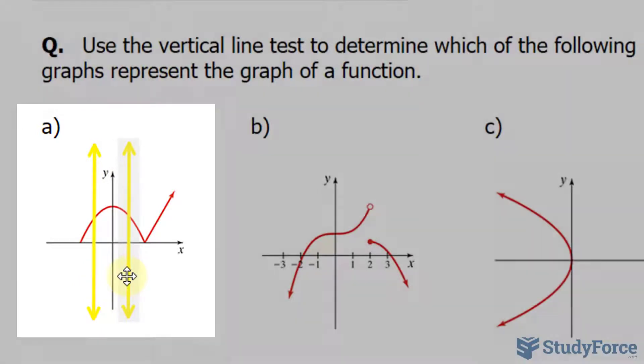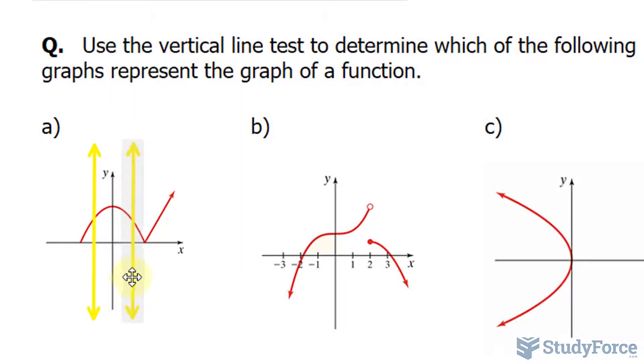As you can see, in this very first example, there's only one y output as I move to the right. Always only one. And that's the case if we were to move the opposite way. So this passes the vertical line test, therefore it's a function.